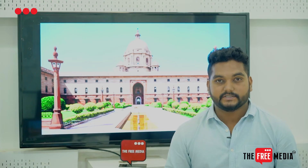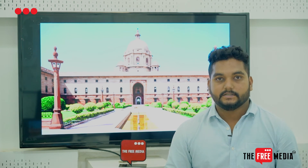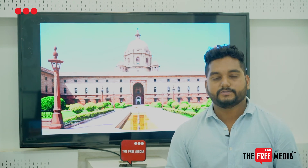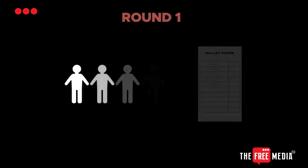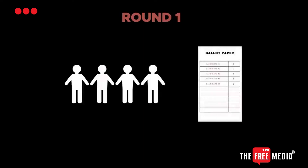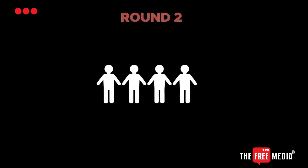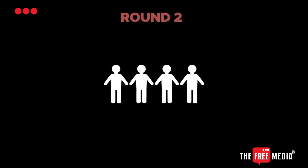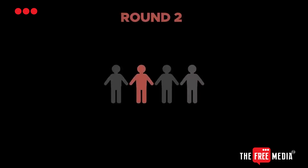Once the voting process is done, the counting starts. There are two rounds of counting. In the first round, if the candidate secures the quota, he or she can be declared the winner. But if the result doesn't come from round one, then in round two the process of elimination starts — the least preferred candidate gets eliminated. This repeats until one candidate is left, who is then declared the winner.